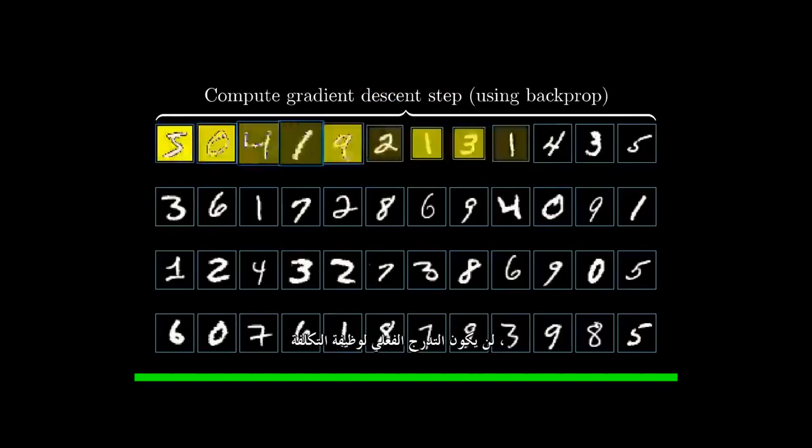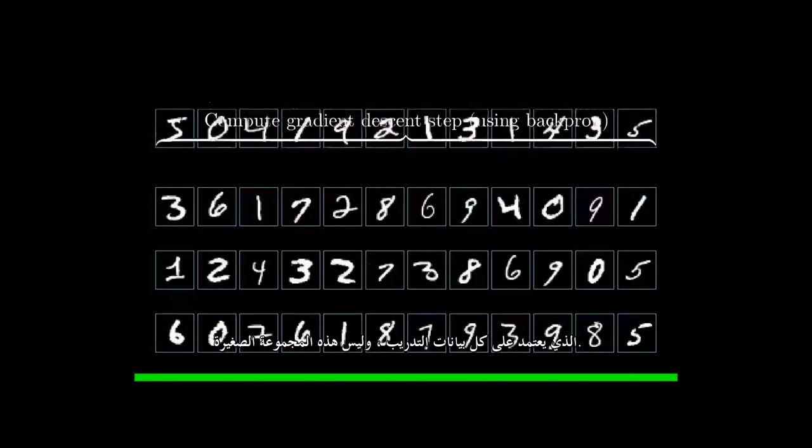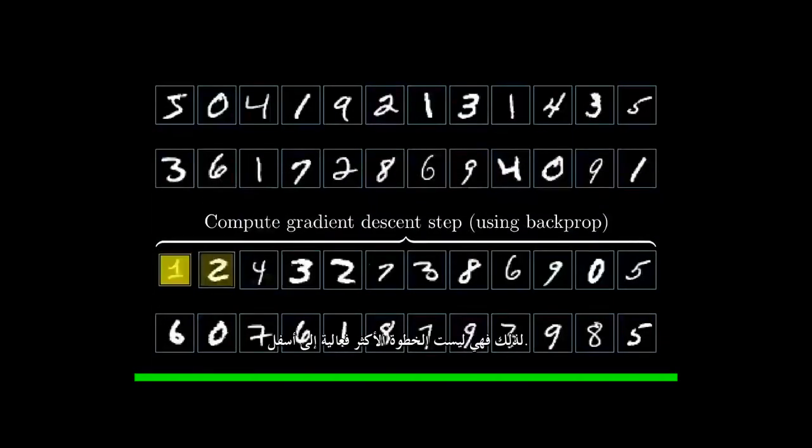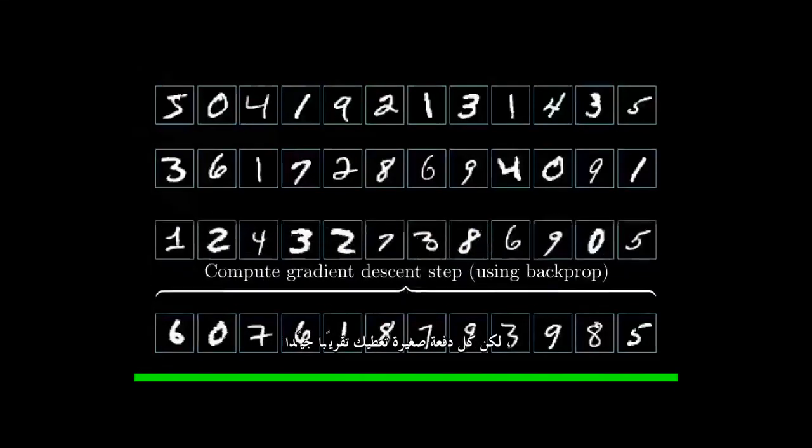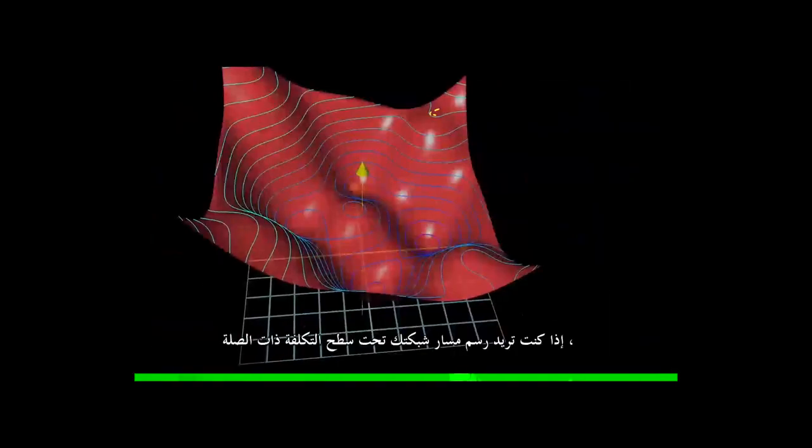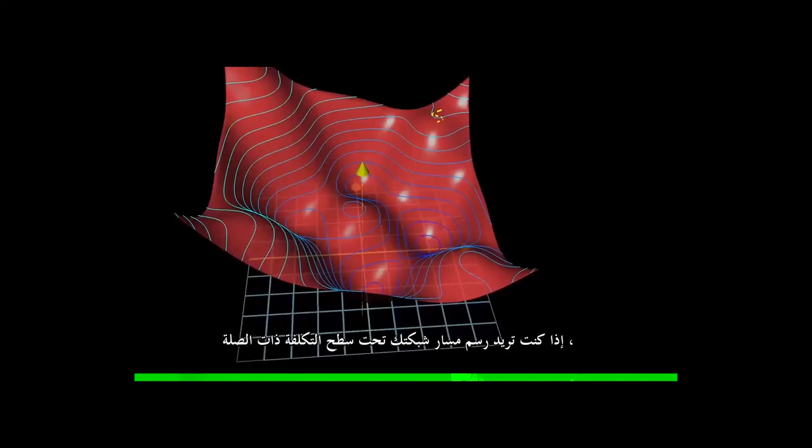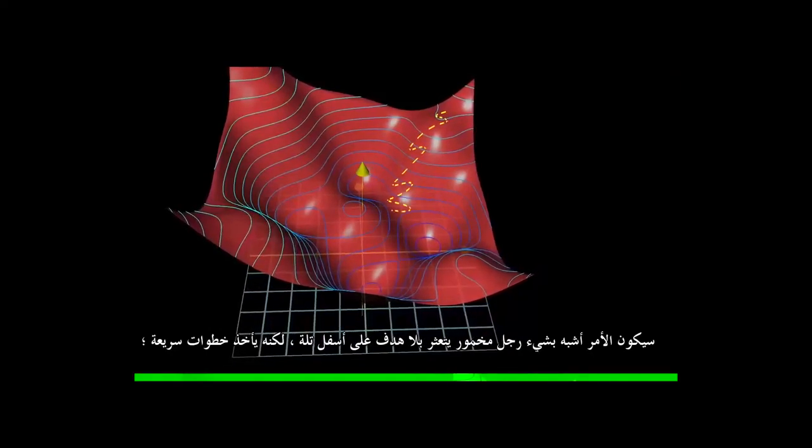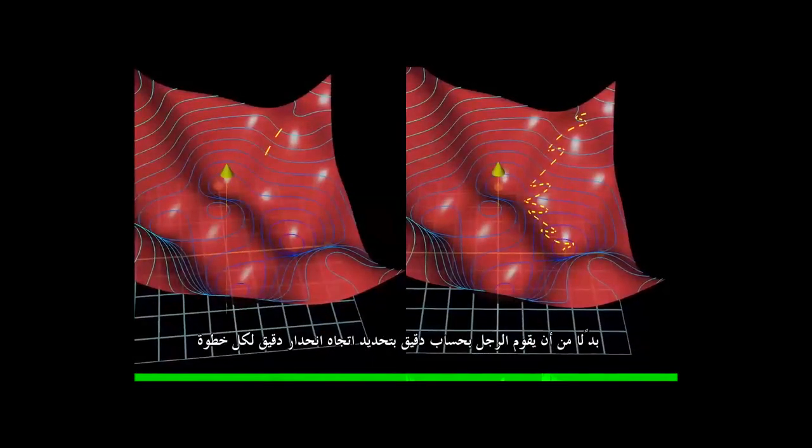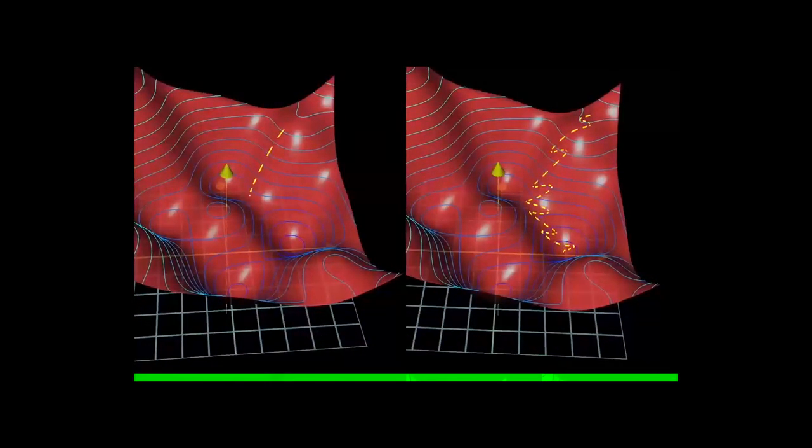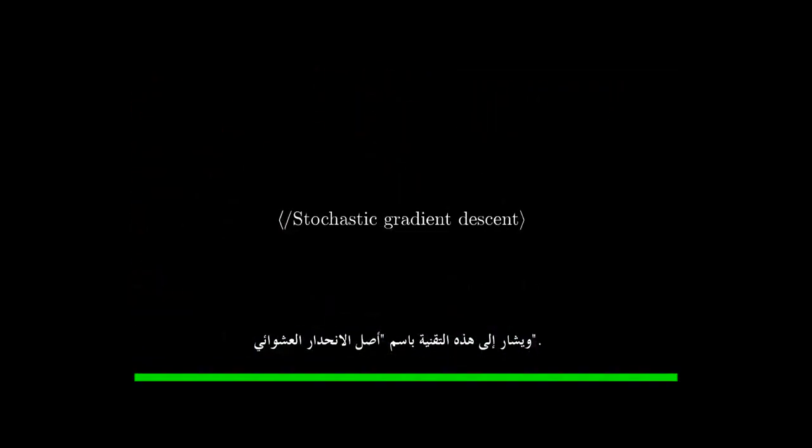It's not going to be the actual gradient of the cost function, which depends on all of the training data, not this tiny subset, so it's not the most efficient step downhill. But each mini-batch does give you a pretty good approximation, and more importantly, it gives you a significant computational speedup. If you were to plot the trajectory of your network under the relevant cost surface, it would be a little more like a drunk man stumbling aimlessly down a hill, but taking quick steps, rather than a carefully calculating man determining the exact downhill direction of each step before taking a very slow and careful step in that direction. This technique is referred to as stochastic gradient descent.